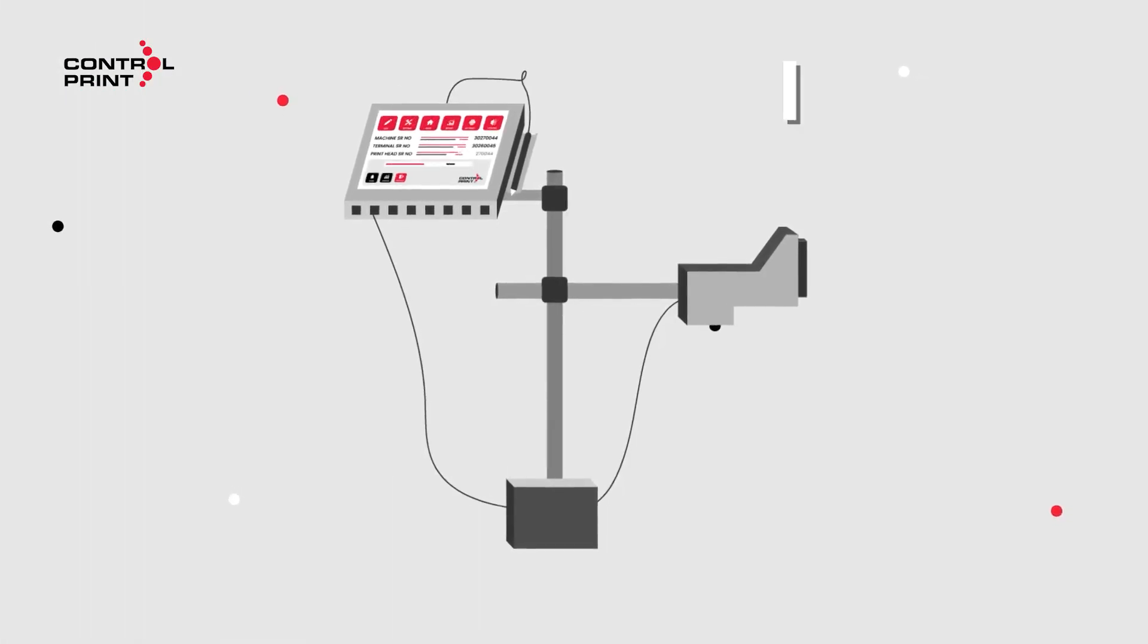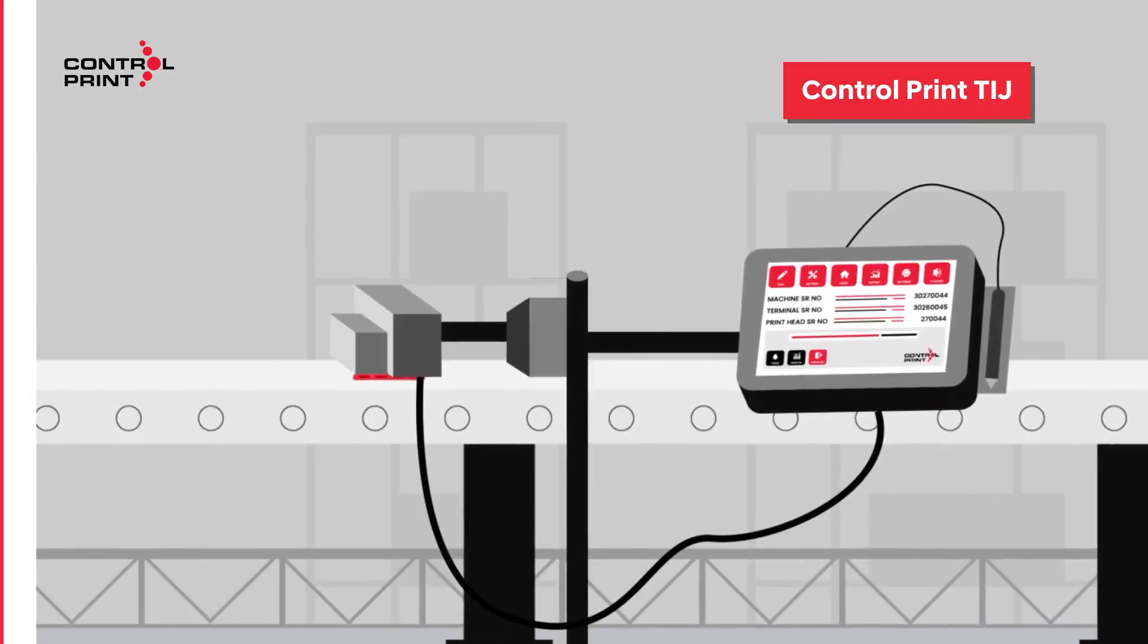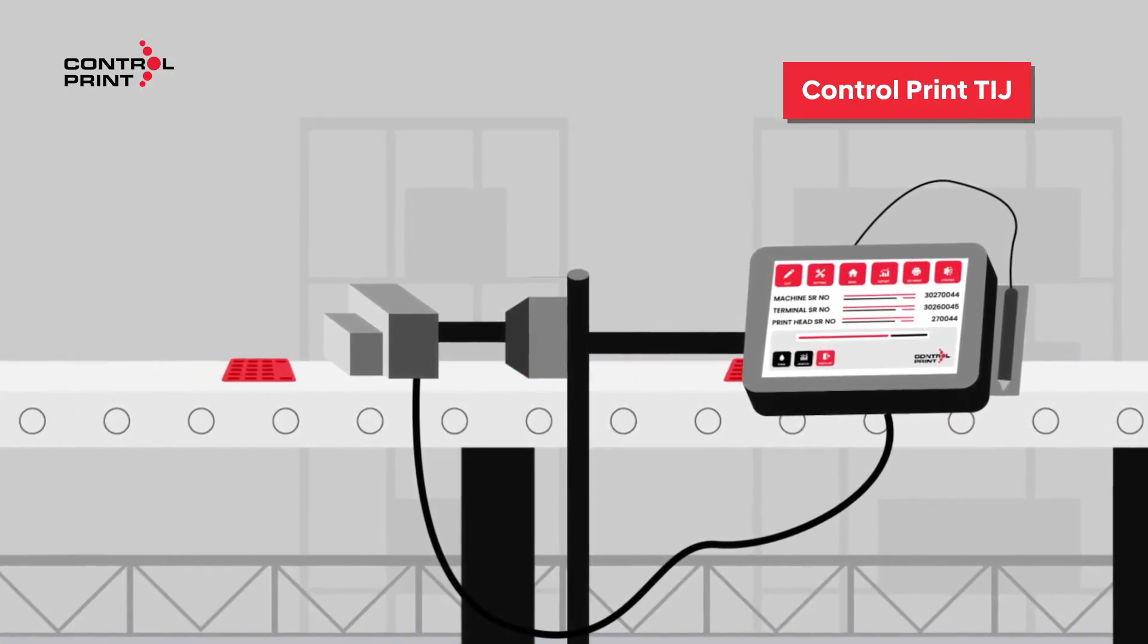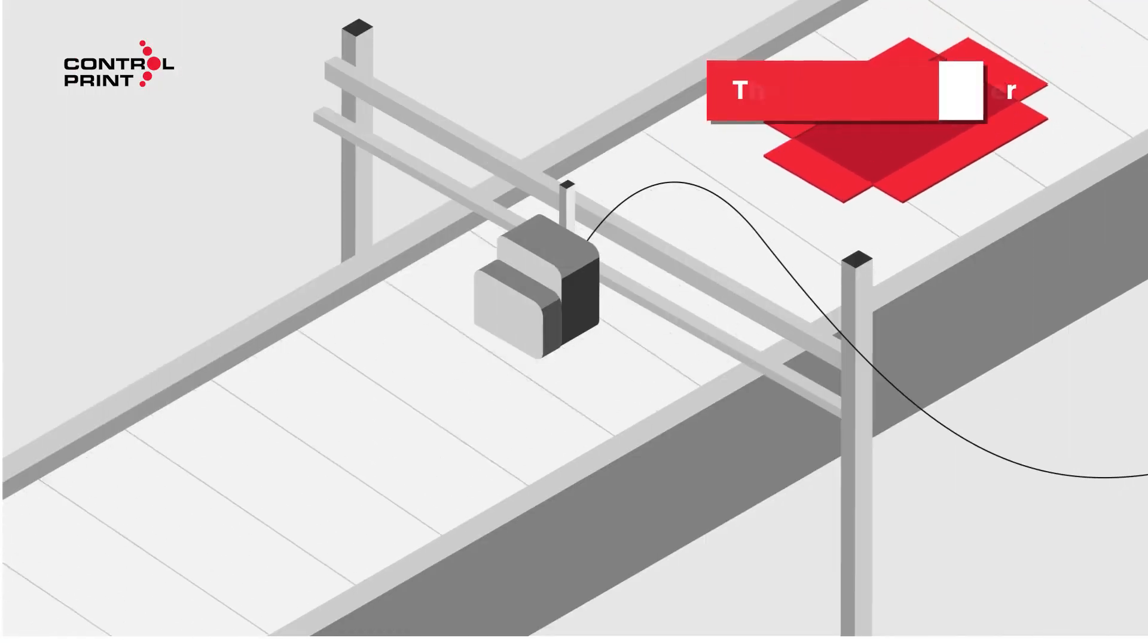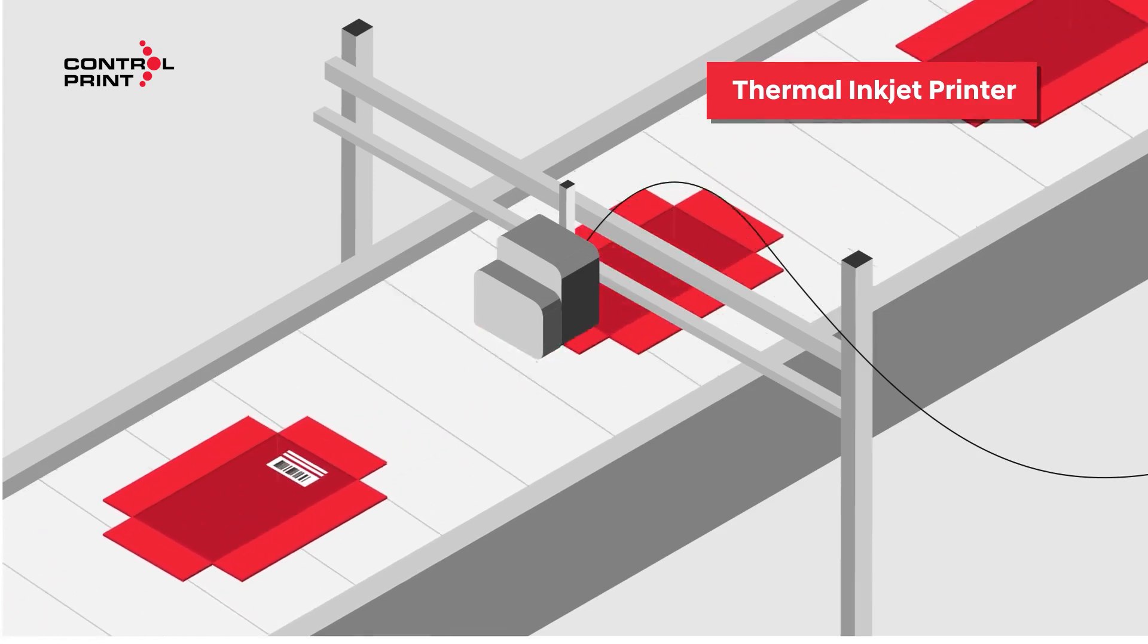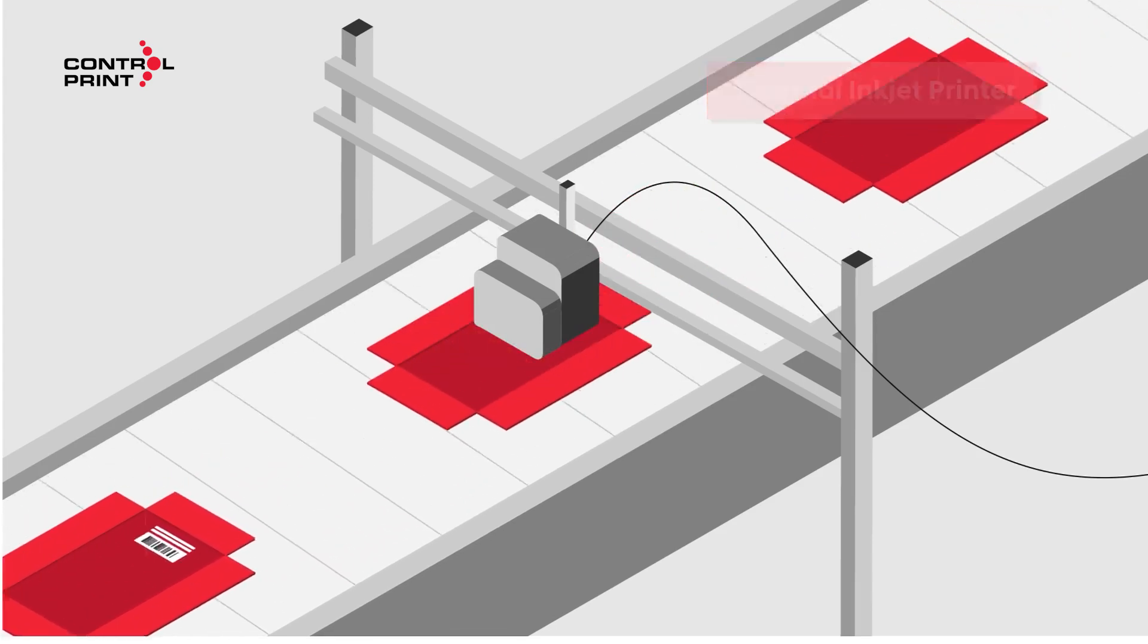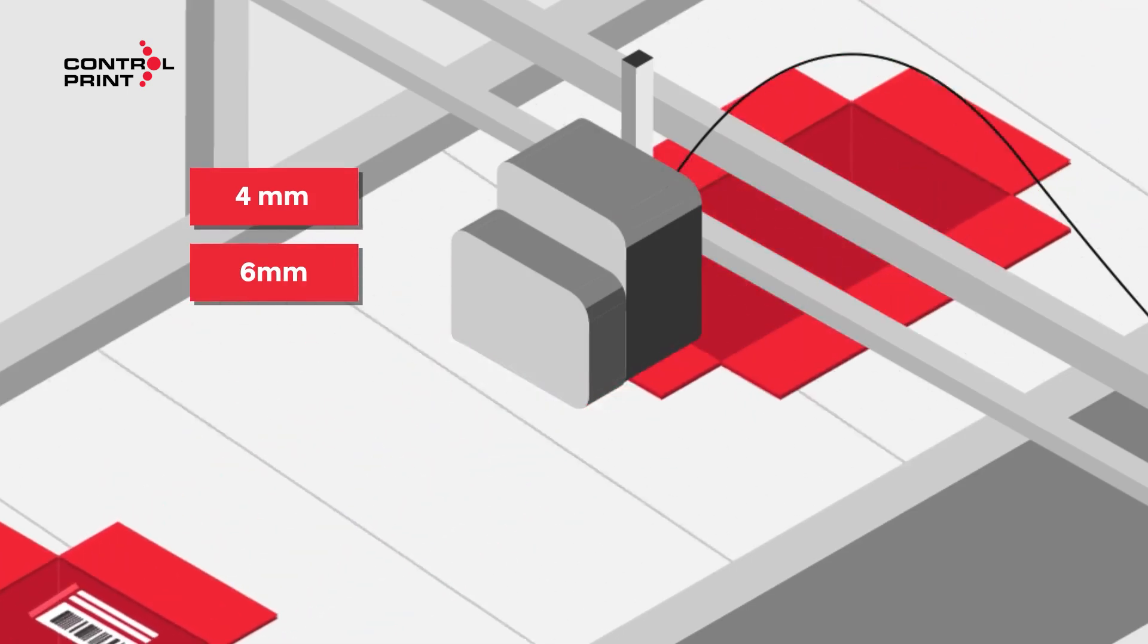The ControlPrint TIJ is designed for easy integration into most production lines, supporting multiple printheads for versatile and efficient operations. The thermal inkjet printer proficiently prints multiple lines of variable information text or a QR code, adhering of 4 or 6 mm.